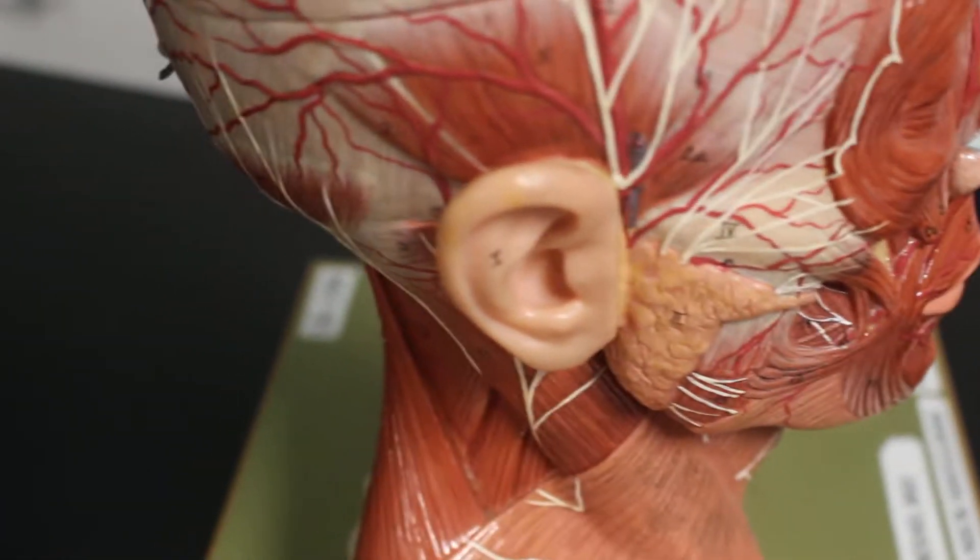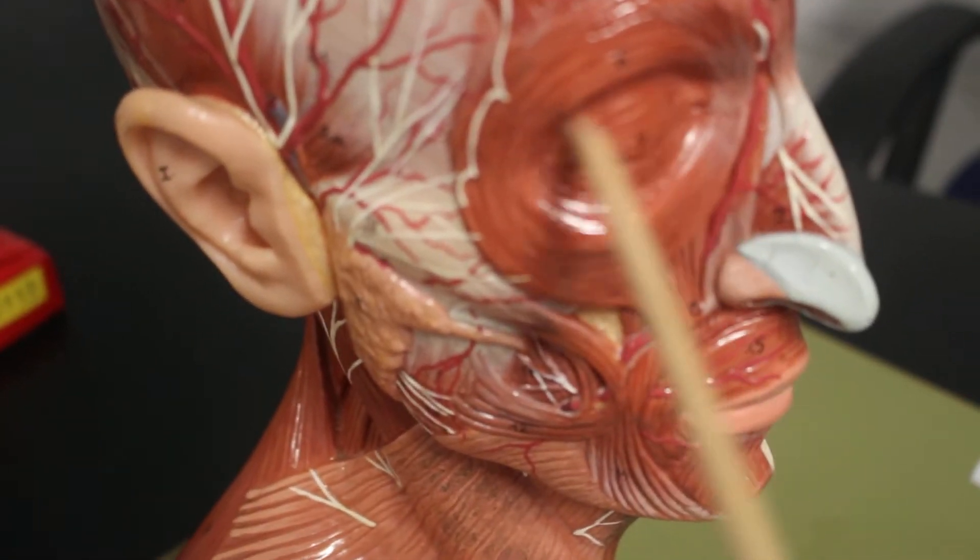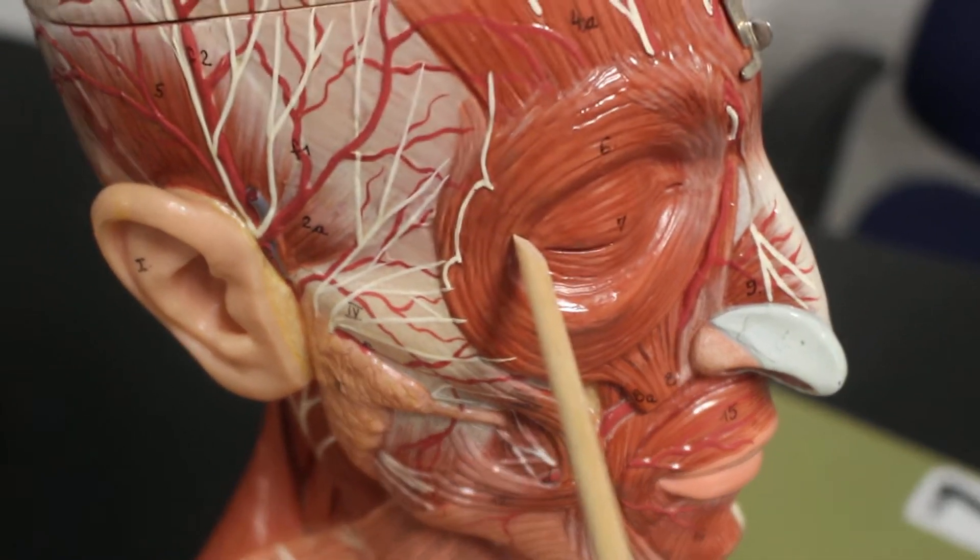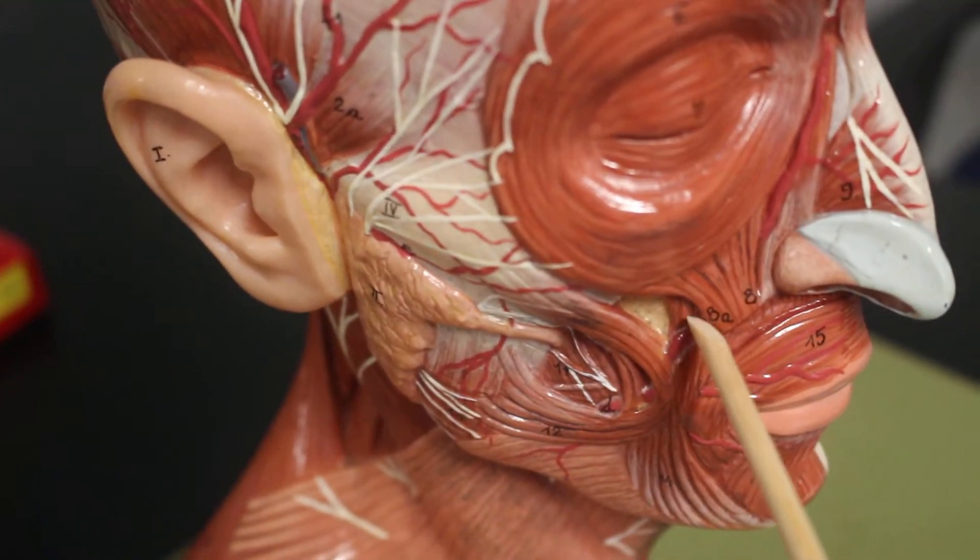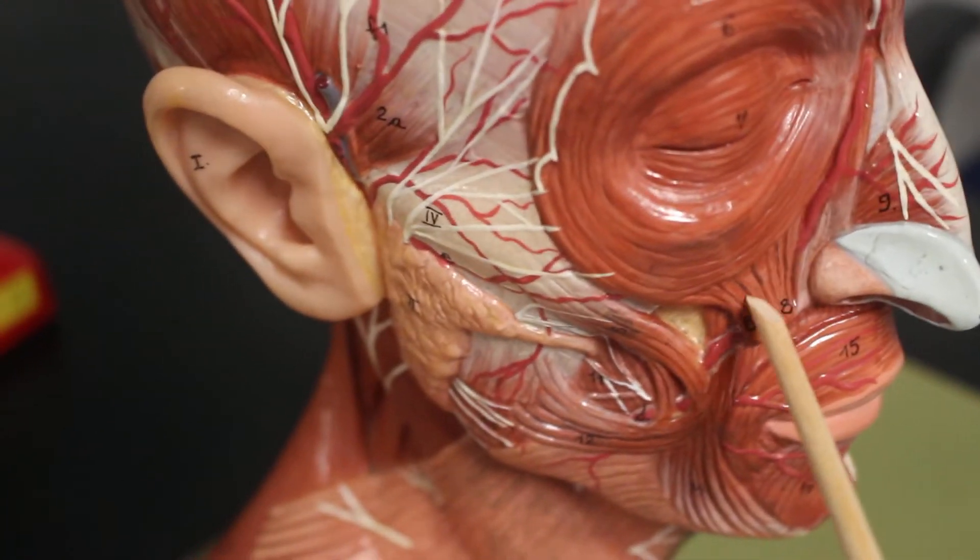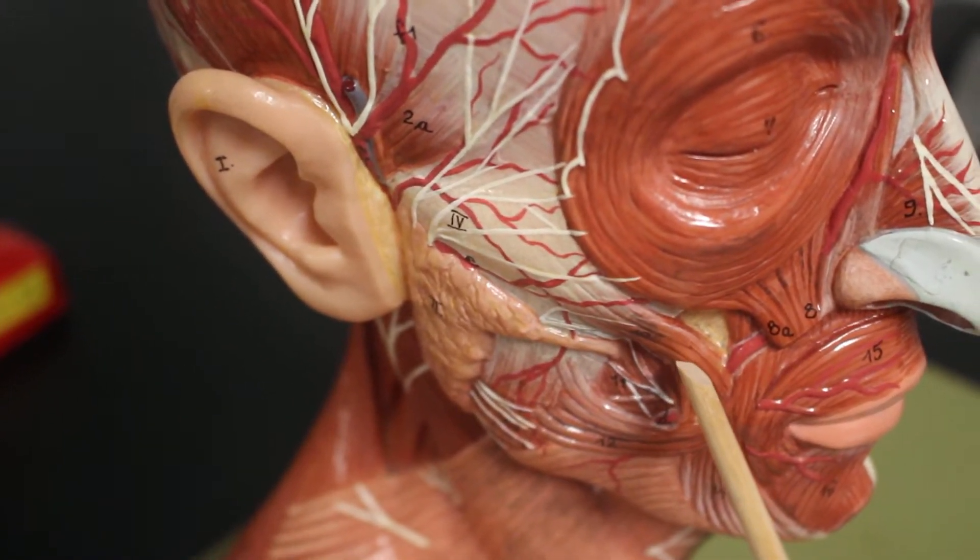Important muscle for chewing. Here is orbicularis oculi going around the eye. Then we have here levator labii superioris. Then here is zygomaticus major.